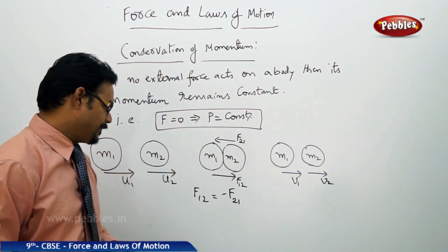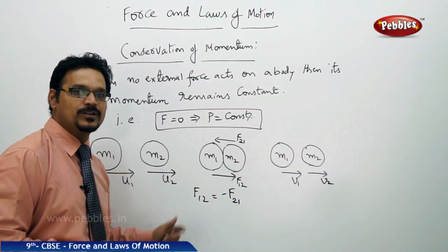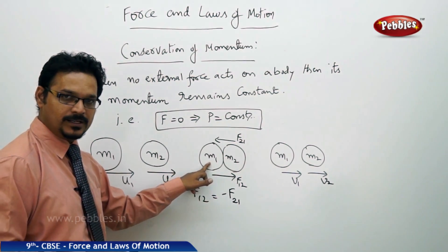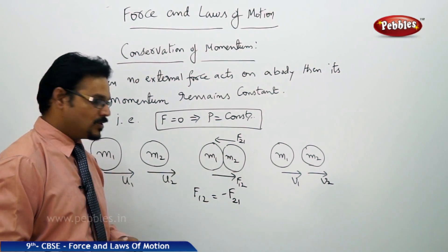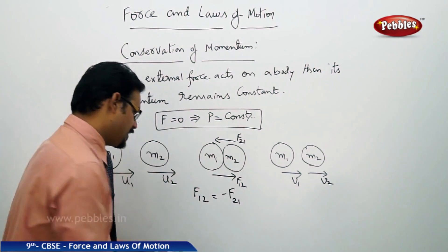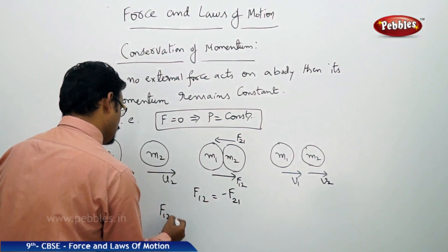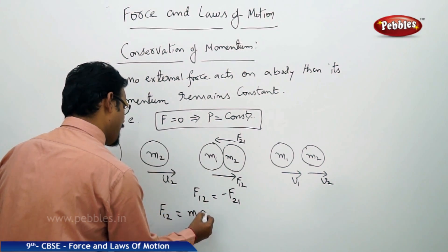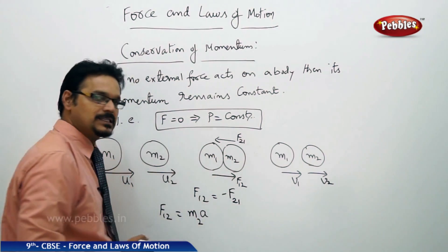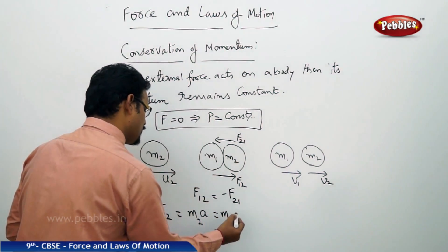Now let me write the expression for F12. F12 is the force by mass m1 on m2. In this force applied on mass m2, according to Newton's second law, the force formula is F12 equals mass into acceleration. It is the mass m2, so m2 into a.